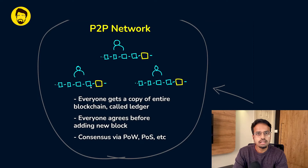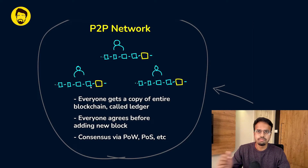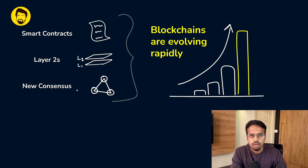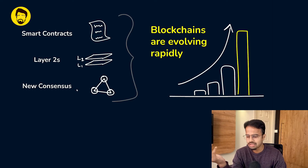This decentralized manner of coming to consensus is what makes blockchain very unique. There are different consensus mechanisms like proof-of-work, used in Bitcoin, and proof-of-stake, used in Ethereum, among others. There is also a difference between blockchains themselves and applications built on top of them. Different blockchains include Bitcoin, Ethereum, Solana, and Avalanche, and using Ethereum, multiple additional chains have been formed. The blockchain space is evolving rapidly — there are now smart contracts, Layer 2 solutions, and new consensus mechanisms being developed.